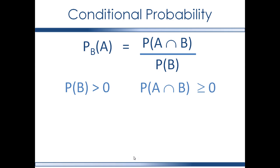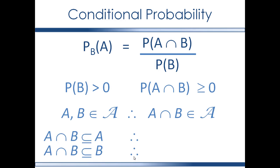Since the sets A and B are in the event set, the intersection of A and B is also an element in the event set. The intersection of A and B cannot be larger than either A or B because the intersection is a subset of A and a subset of B. It could even be all of A and all of B, but it will not be larger than either. So the probability measure of the intersection will also be smaller than or equal to the probability measure of either A or B.